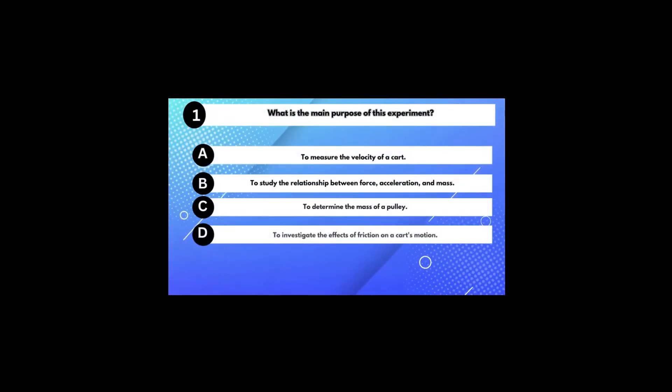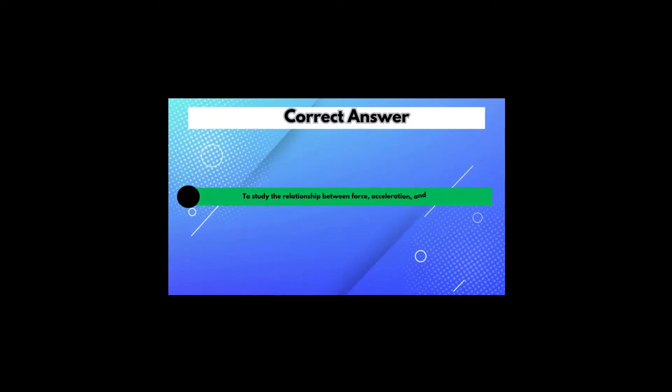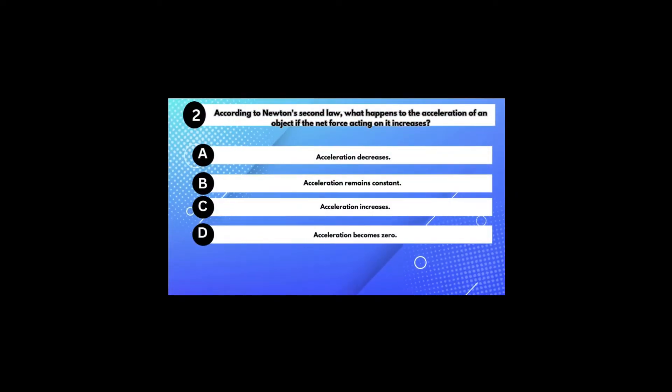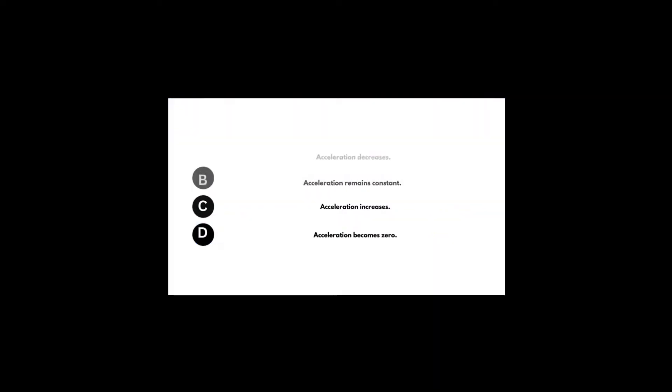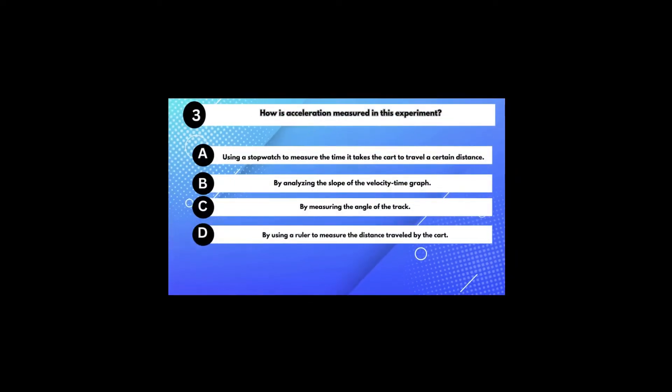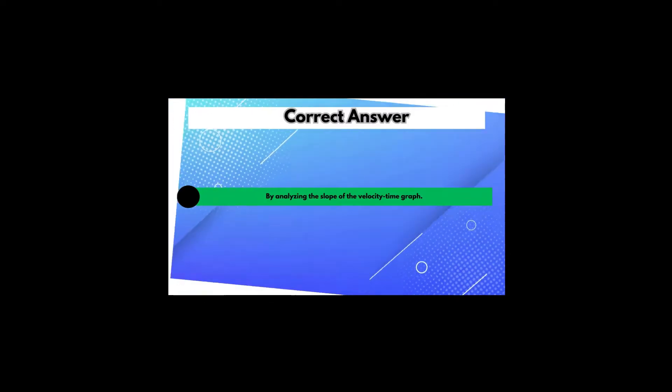What is the main purpose of this experiment? Answer B: To study the relationship between force, acceleration, and mass. According to Newton's second law, what happens to the acceleration of an object if the net force increases? Answer C: Acceleration increases. How is acceleration measured in this experiment? Answer B: By analyzing the slope of the velocity-time graph.